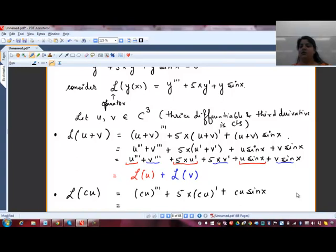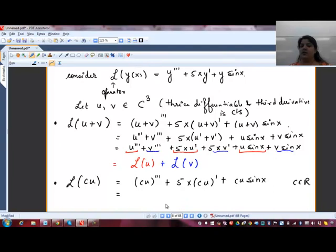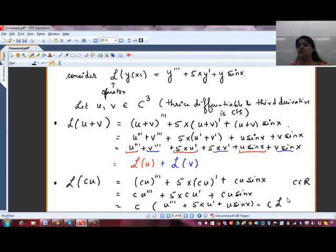Which by definition here will be, where c belongs to a real number, and c can be pulled out. It's (cu)''', 5x(cu)', plus cu sin x. And this equals c times u'''. I am just taking out c, that's it. Taking c common. And I will get here c times L of u.